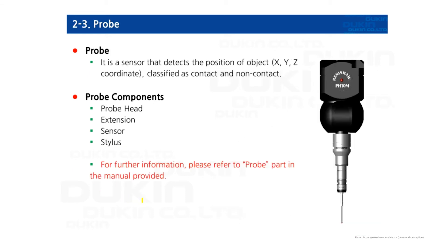Second, the probe. It is a sensor that detects the position of objects in space, and is classified as either contact or non-contact probes. We're going to look at the details of probe components later.